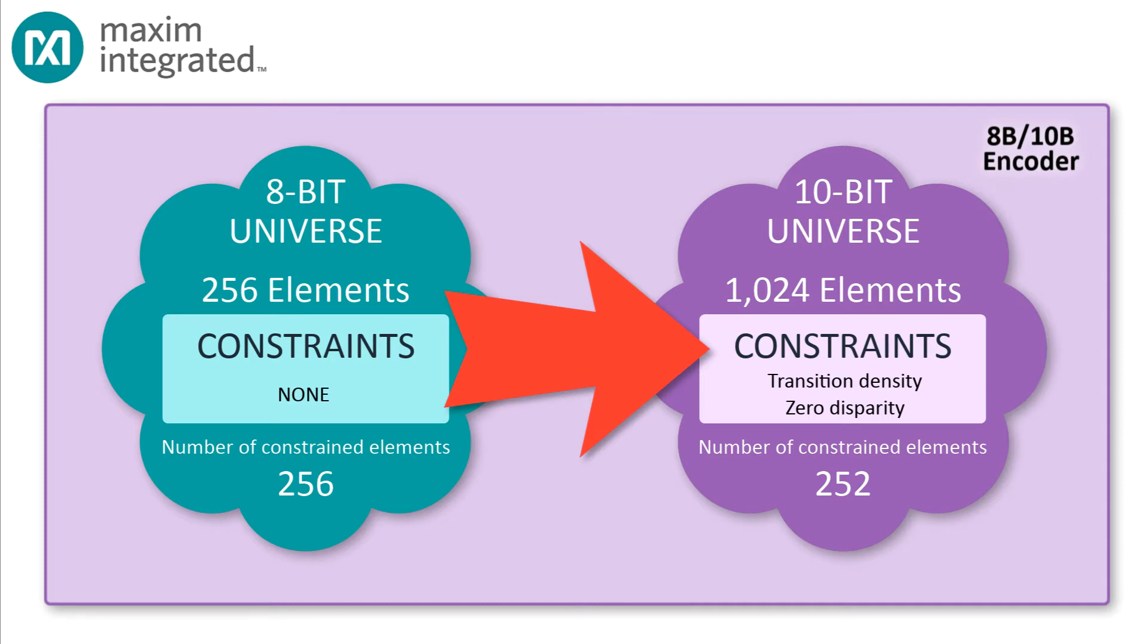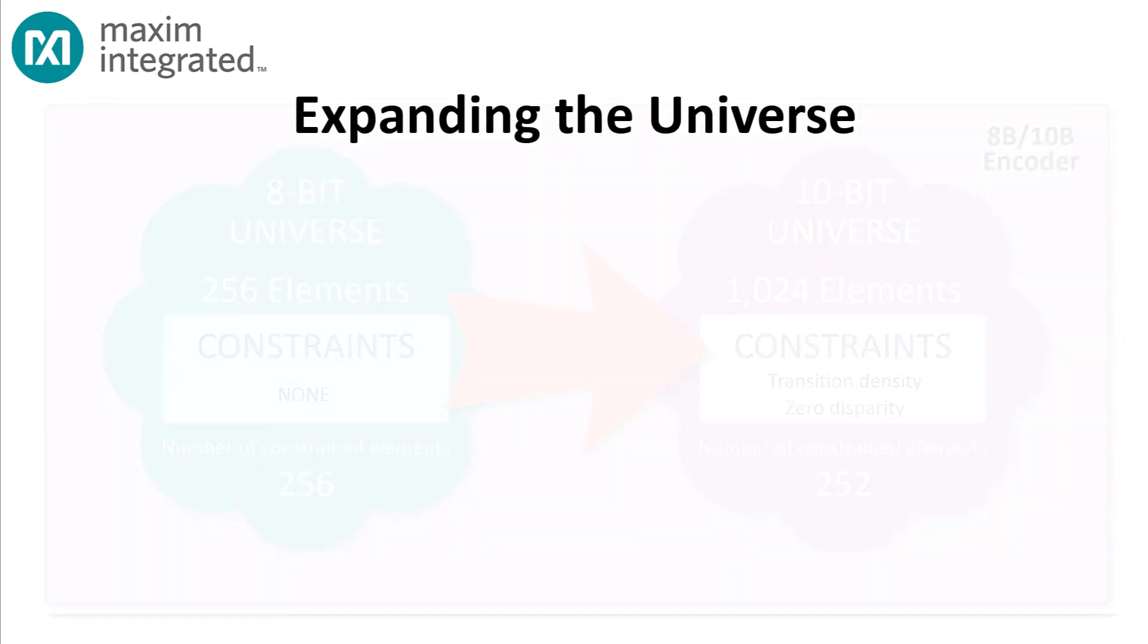So, if we're going to map every 8-bit code onto a 10-bit code, we'll need to include some 10-bit codes that contain 4 1s and 6 0s and some codes that contain 6 1s and 4 0s. But a code that contains 6 1s and 4 0s increases the disparity by 2. And a code that contains 4 1s and 6 0s decreases the disparity by 2. What gives?